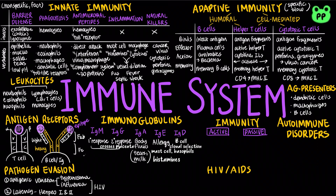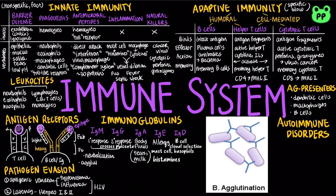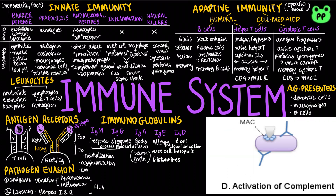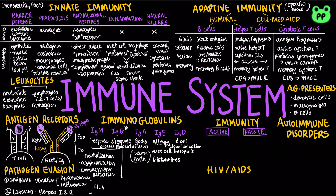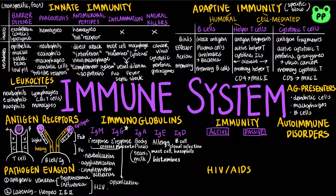Mechanisms of IgM and IgG include neutralization, or the blockage of pathogens to prevent infection; agglutination, in which antibodies clump microbes so they are more easily recognized by other immune cells; and activation of the complement system, which promotes cell lysis. IgM is more effective at activating the complement system than IgG. IgG can also facilitate opsonization, which enhances phagocytosis by marking an antigen, as well as activation of the cell-mediated immune response.